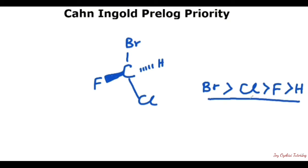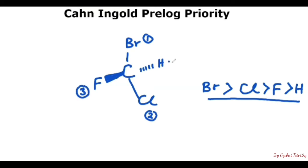After writing this, the next thing we need to do is to assign the numbers, starting with the highest one as 1, then the second highest as 2, the third highest as 3, and the last one, which is the least priority, as 4.